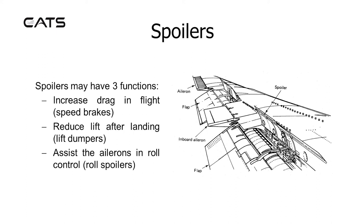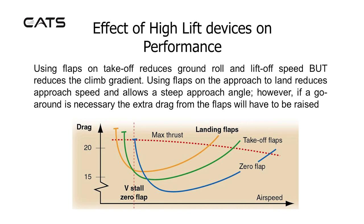Spoilers have three functions: they increase drag in flight as speed brakes, reduce lift after landing as lift dumpers, and assist the ailerons in roll control as roll spoilers. The effect of high lift devices on performance: using flaps on take-off reduces ground roll and lift-off speed but reduces the climb gradient. Using flaps on the approach to land reduces approach speed and allows a steep approach angle; however if a go-around is necessary, the extra drag from the flaps will mean they will have to be raised.